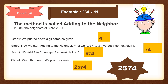Then 2 plus 3 is 5, so we get 5 as the next digit. And in step 4, we write the 100s place as it is, that is 2. So we get the answer 2574. We repeat this process until we cover all the digits.